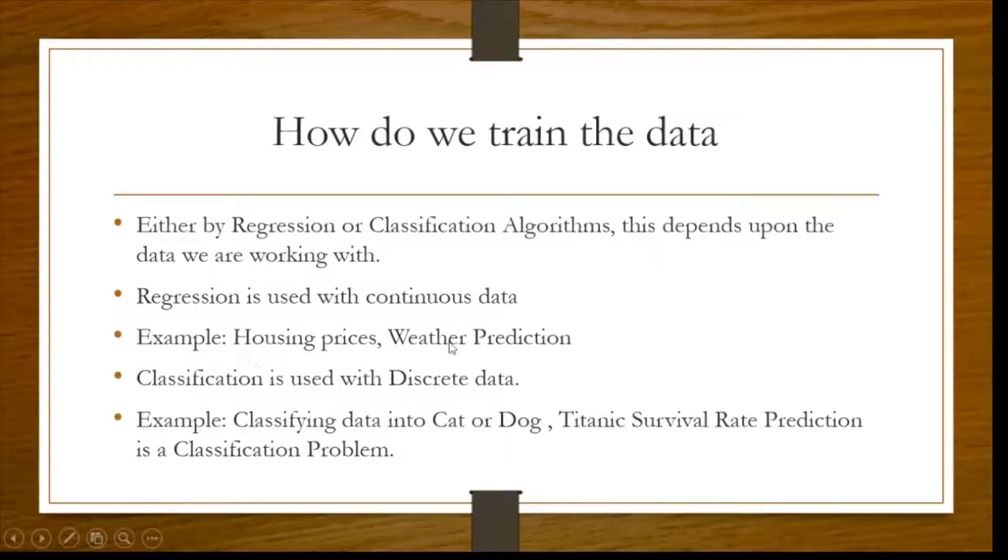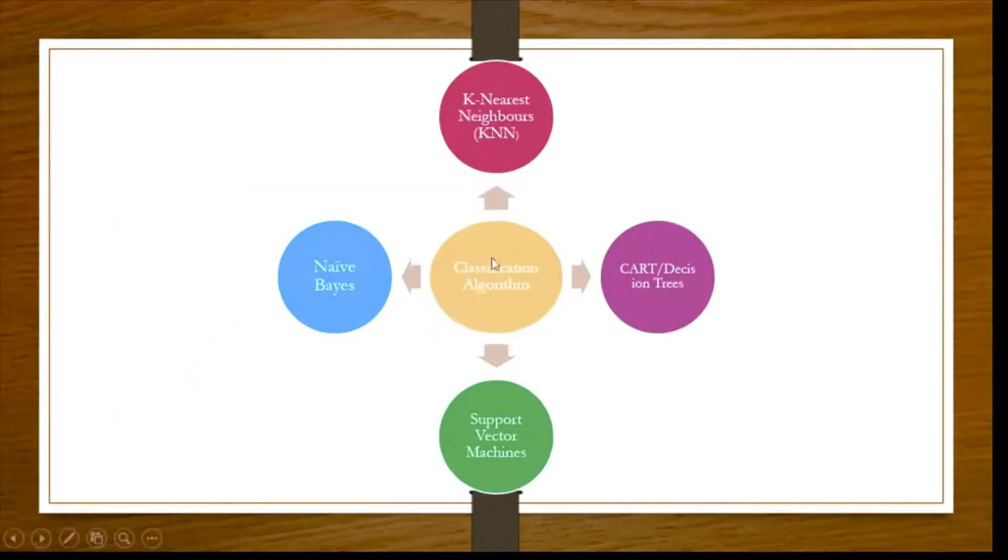And classification is used with discrete data. Either you classify dog or cat. And one of the examples which we are going to see is also Titanic survival rate prediction, which was a Kaggle competition. We have to predict how many survived and how many died. So that is a classification problem. Now coming next to the classification algorithms that we use to train the model.